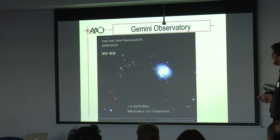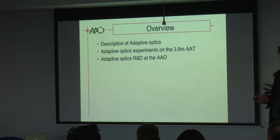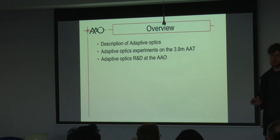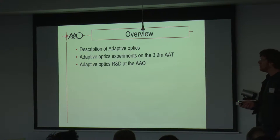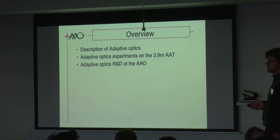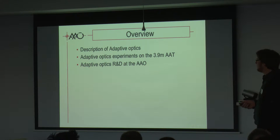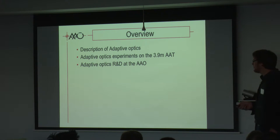So this is a talk overview: I'll now give a description of adaptive optics, a little bit of background on how adaptive optics work, and also talk about some adaptive optics experiments on the 3.9 meter AAT — the Anglo-Australian Telescope — and some R&D projects we have here at the AAO.